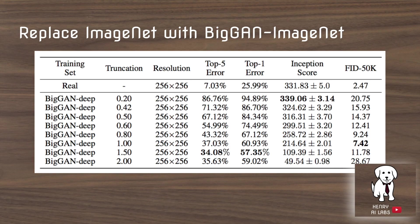The first test in this study is to replace the ImageNet data entirely with BigGAN-generated ImageNet data. The different levels across the table represent different values for the truncation trick, a sampling technique used in BigGAN where values along the Z vector are replaced if they fall outside the truncation range. This is a trade-off between quality and diversity, and higher truncation values — with higher diversity and lower quality — yielded the best classifier results.